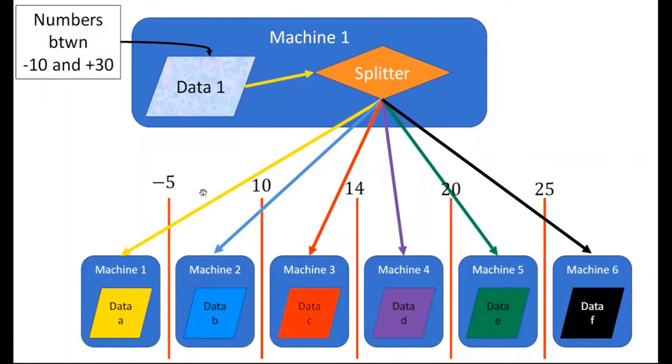While splitting the data, we will put the element in data A if it is less than or equal to -5. We will put the element in data B if it is greater than -5 and less than or equal to 10, and same for the rest. Data F will contain elements greater than 25.